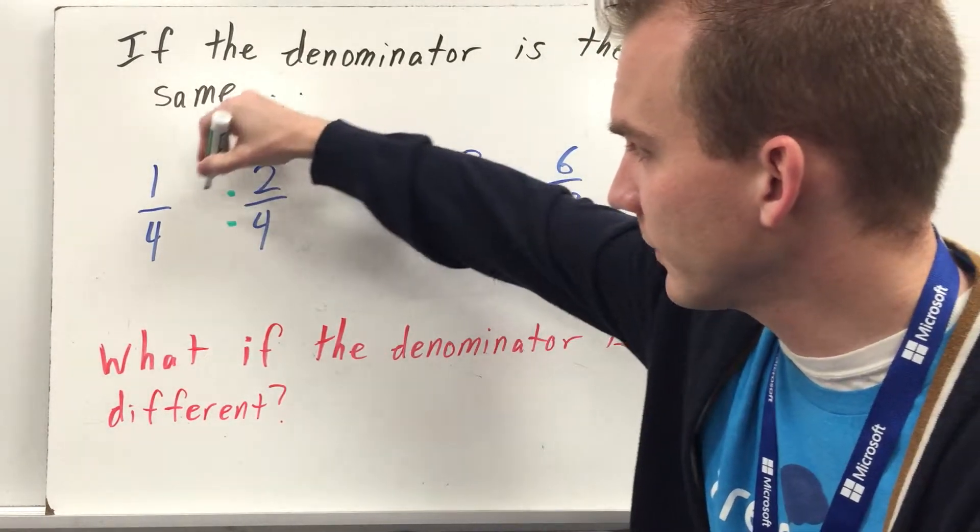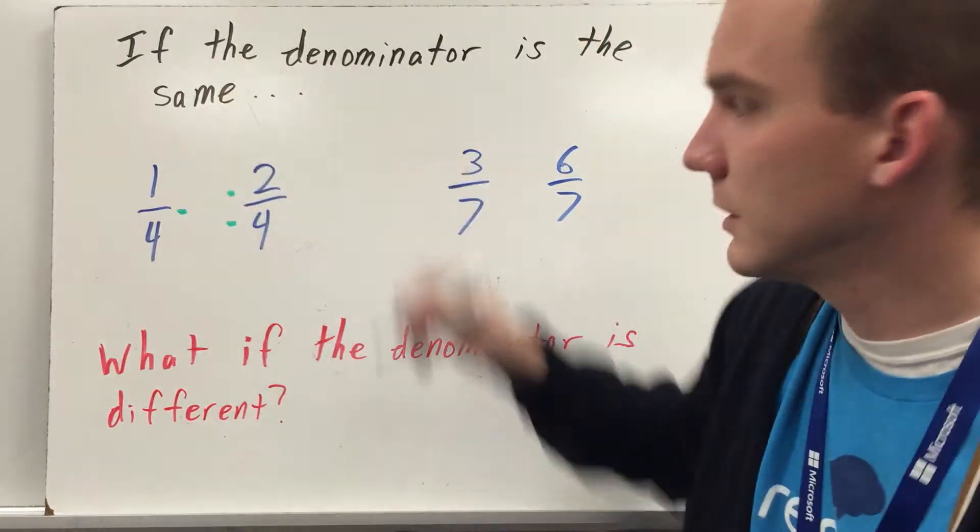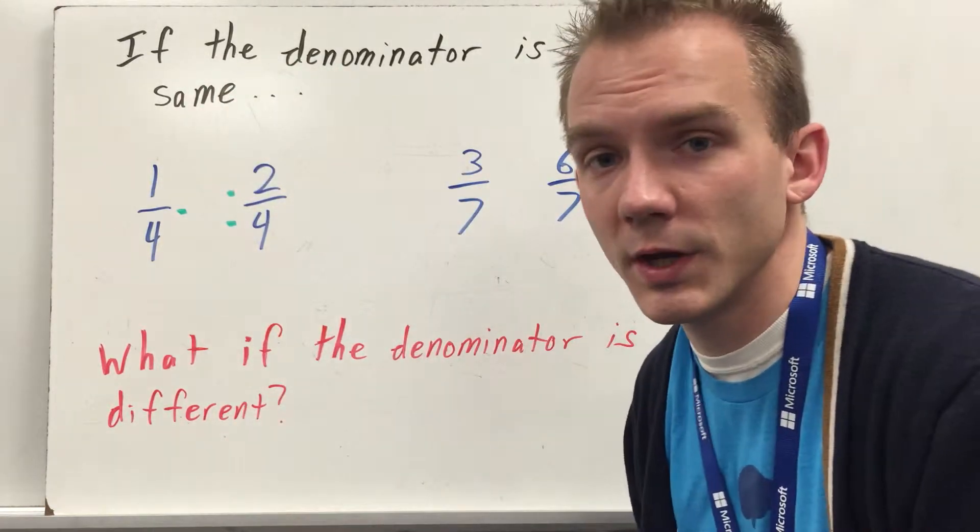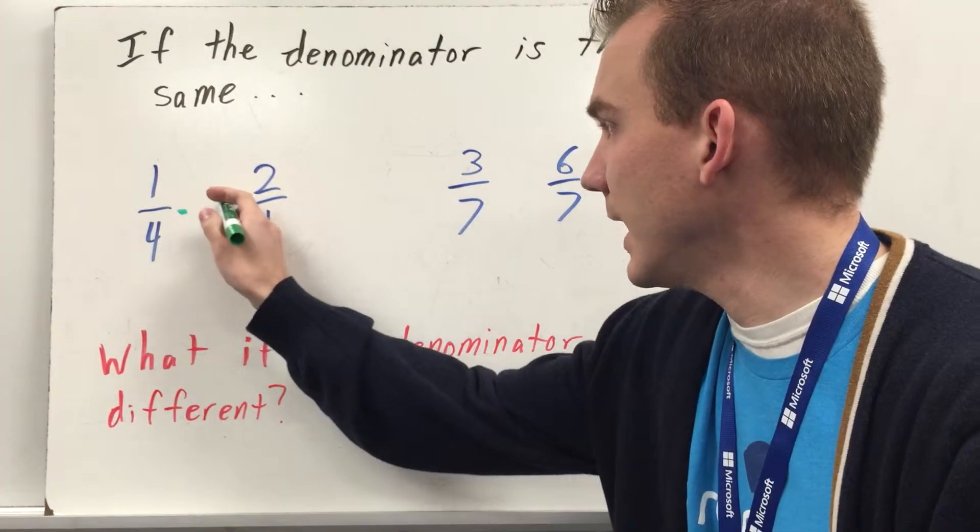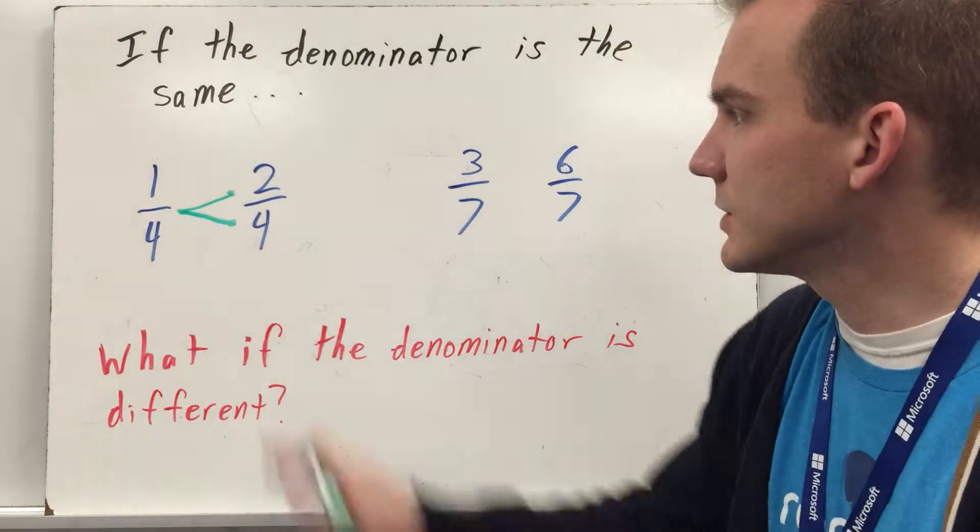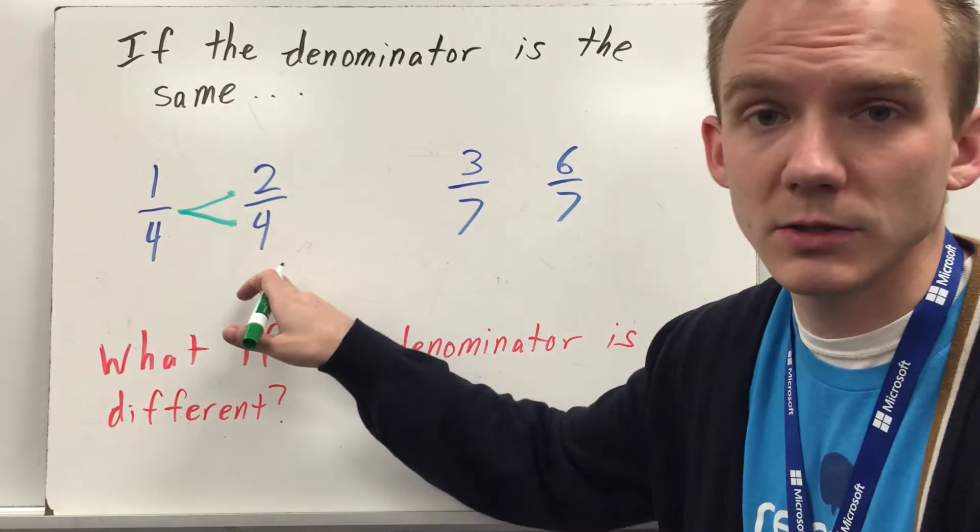Two-quarters because two is greater than one. So what I do is I give the bigger fraction two dots, and I give the smaller fraction one dot, and I connect the dots to draw my symbol.